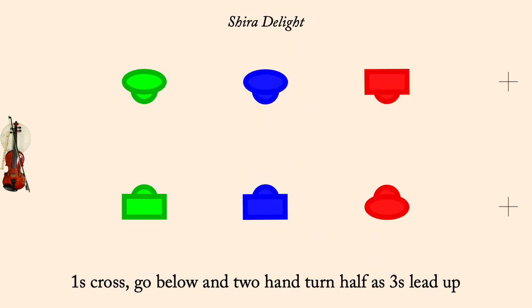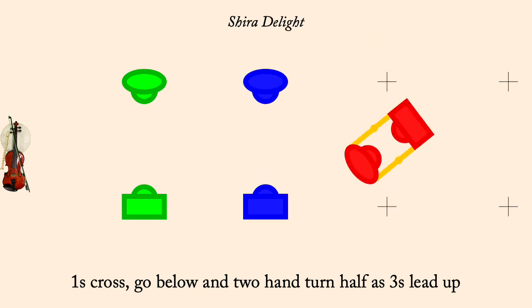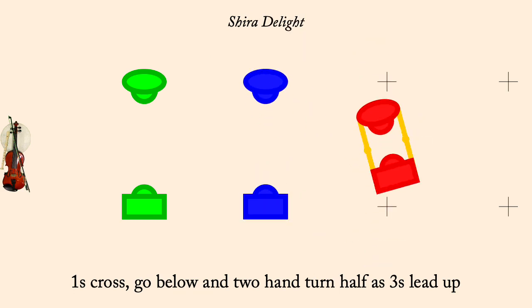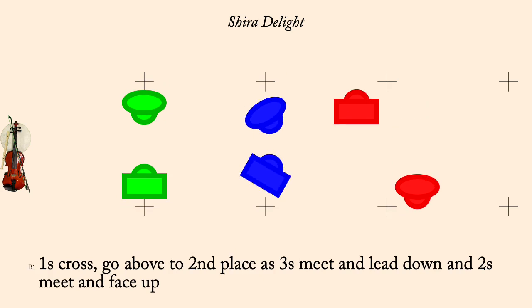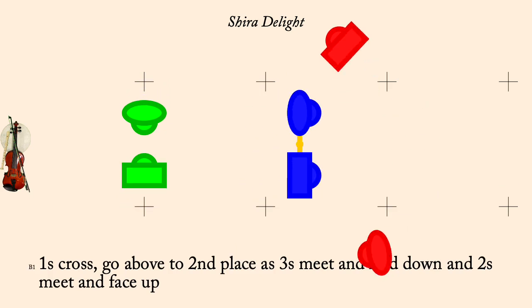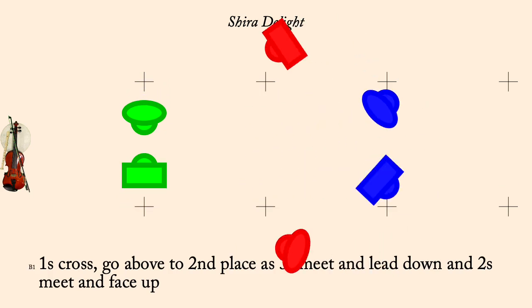Ones cross, go above, as threes lead down. End couple's cast, middle leads up, into a Morris mirror hay.